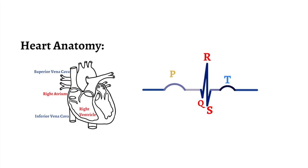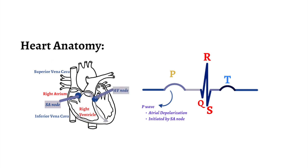The SA node, otherwise known as the pacemaker of the heart, initiates an electrical impulse which then excites the atria, or top chambers of the heart. The excitation of the atria is represented by the P-wave. The electrical impulse then passes to the AV node, where it is routed to both sides of the lower chambers, called the ventricles. The excitation of the ventricles is demonstrated by the QRS complex, which consists of a dip, then peak, then another dip. Finally, the ventricles repolarize, which is represented by the T-wave.